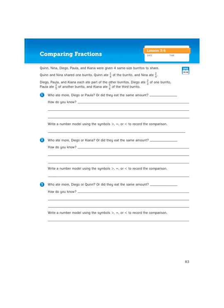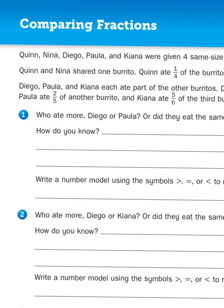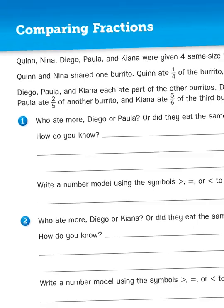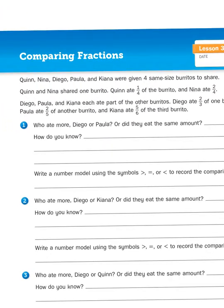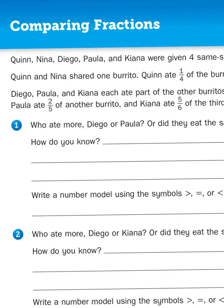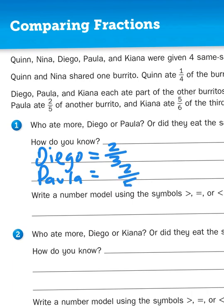Question number one asks: who ate more, Diego or Paula? Or did they eat the same amount? So first we've got to figure out what Diego ate and what Paula ate. Diego ate two-thirds of one burrito, and Paula ate two-fifths. So let's write those down. Diego equals two-thirds, and Paula equals two-fifths.